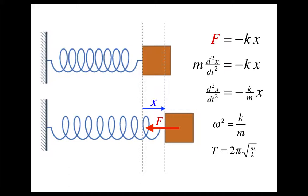We have determined the period of that simple harmonic motion. It's worth taking a moment to think about what affects the period. Mass m and spring constant k are the two things that affect it. If you increase the mass, that increases the period — the amount of time it takes for the motion to repeat. If you increase the spring constant, using a tighter spring, you actually reduce the period. You can also think about what doesn't appear in the period equation — for example, amplitude does not affect the period of the motion.